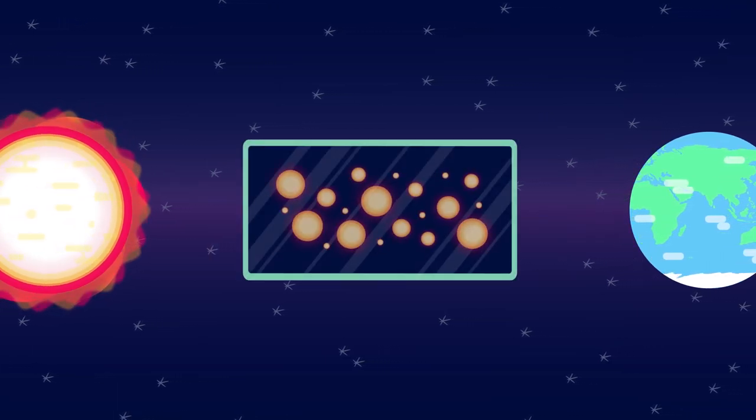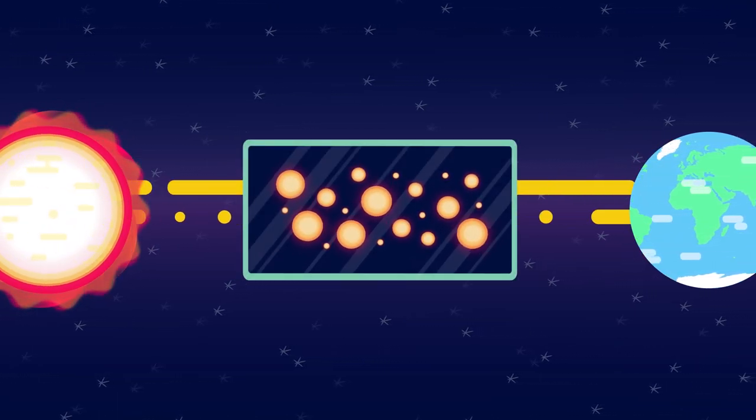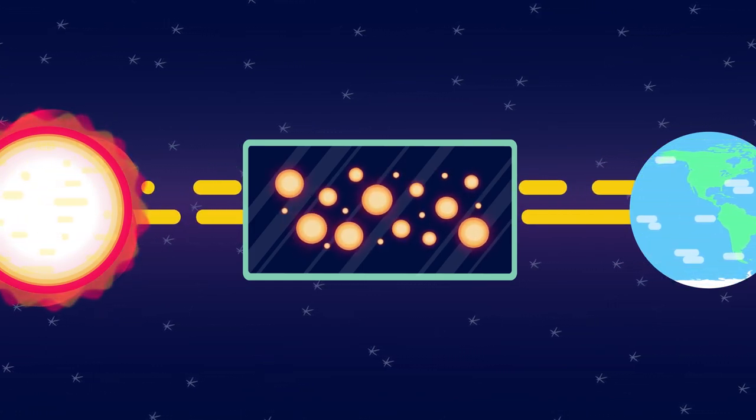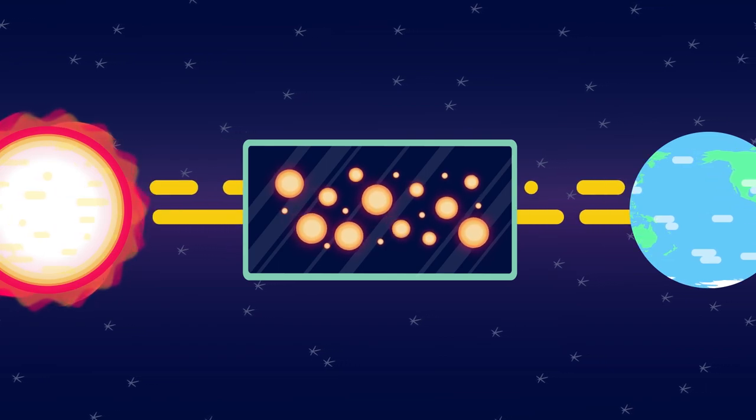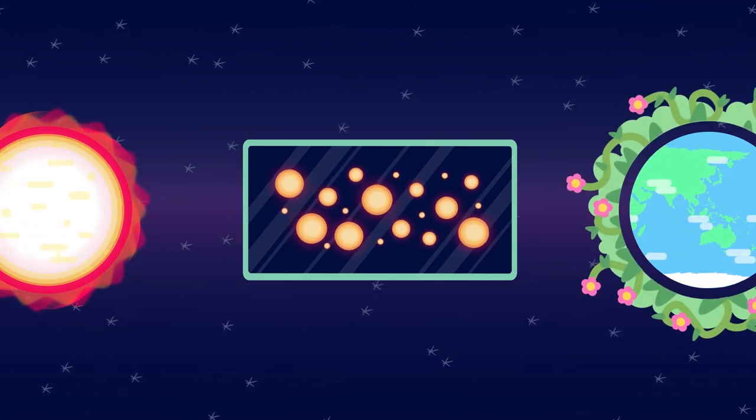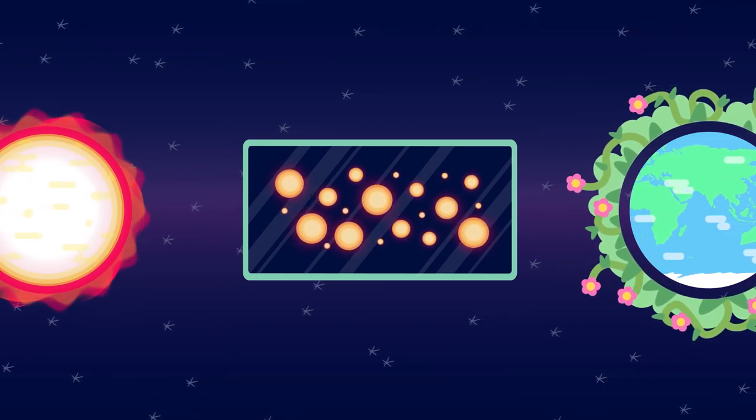Tiny particles of light, called photons, are produced by the Sun as it burns. Those particles of light can travel 90 million miles from the Sun to the Earth in just over eight minutes, giving us light and heat and energy to fuel life on our planet.